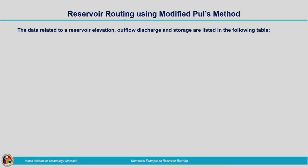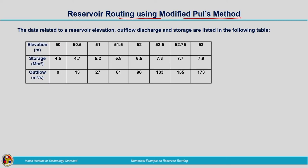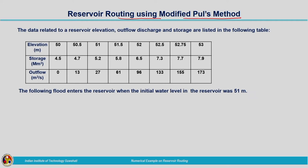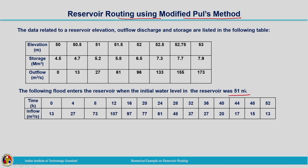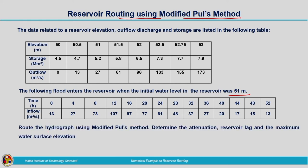This example is related to reservoir routing using the modified pulse method. The data related to a reservoir's elevation, outflow discharge, and storage are listed in the following table. The following flood enters the reservoir when the initial water level was 51 meters. Route the hydrograph using the modified pulse method and determine the attenuation, reservoir lag, and the maximum water surface elevation.